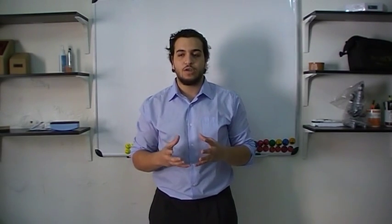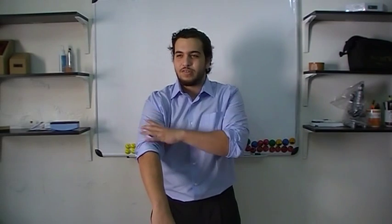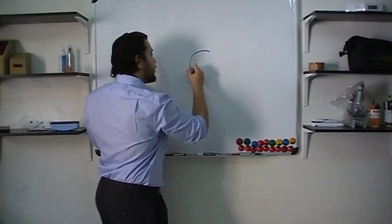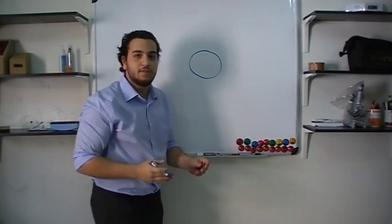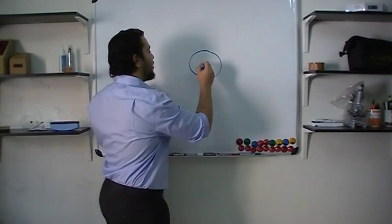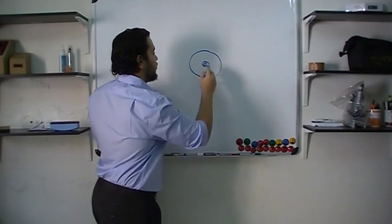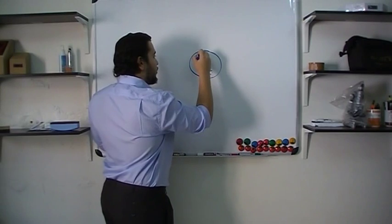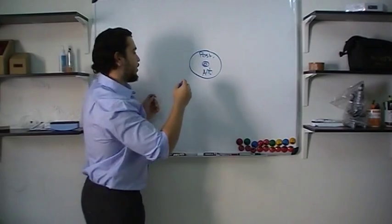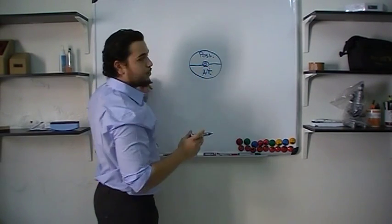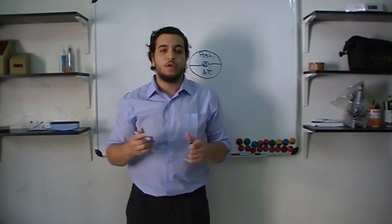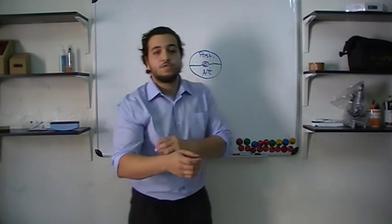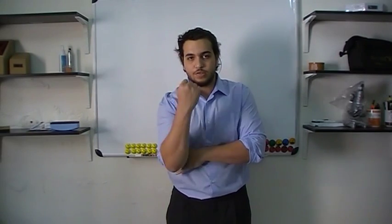We also have the brachial fascia, which forms a sleeve around the arm. In a cross-section of the arm, with the humerus in the center, we have the anterior part and the posterior part. The brachial fascia sends in the medial intramuscular septum and the lateral intramuscular septum, dividing the arm into an anterior flexor compartment and a posterior extensor compartment.